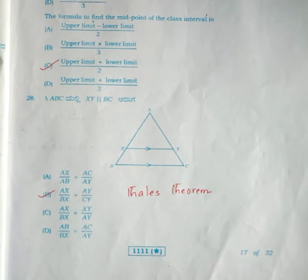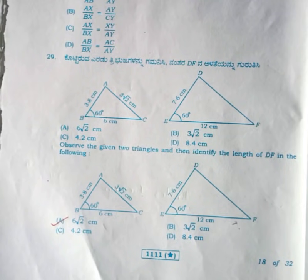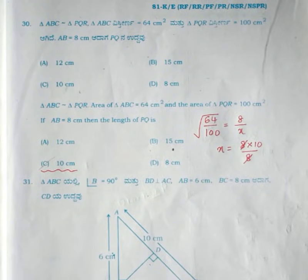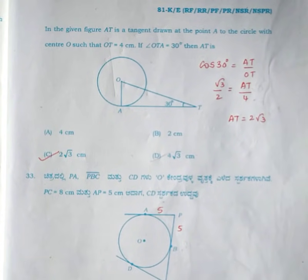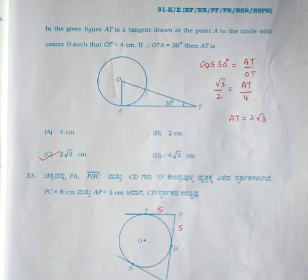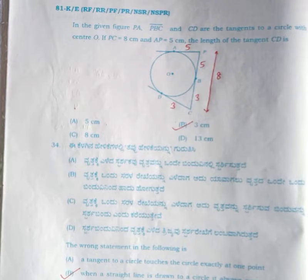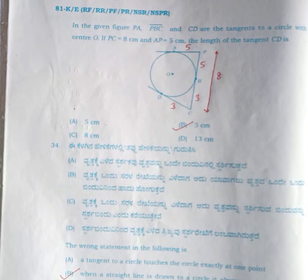For the 28th question, using Thales theorem, the correct answer is option B: ax divided by bx equals ay divided by c1. Using similarity criteria, the 29th question answer is option A, 6 root 2 centimeter. For question number 30, the correct answer is option C, 10 centimeter. Question number 31: by using similarity criteria in the triangle, the correct answer is option B, 6.4 centimeter. Question number 32: the correct answer is option C, 2 root 3 centimeter.